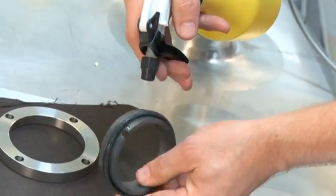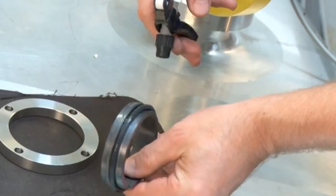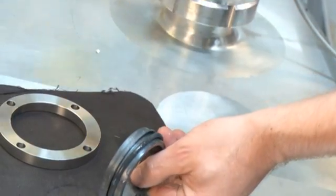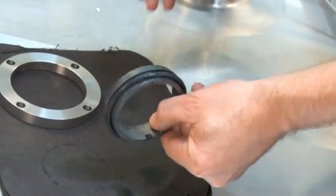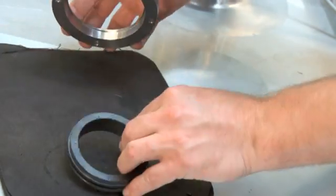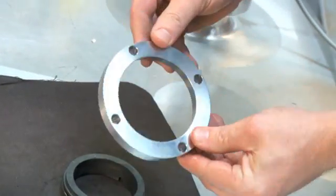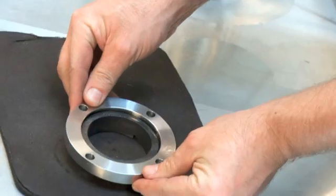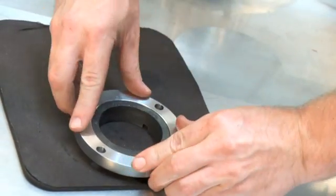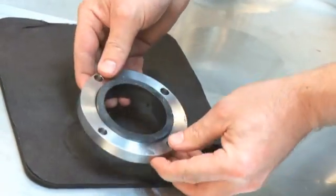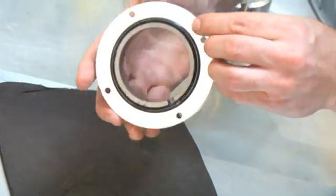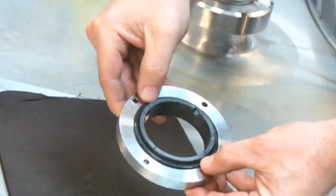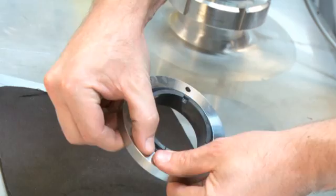Lubricate it with water to make it slide easily into place. Mount the stationary part of the seal and O-ring in the retainer ring. Make sure that the O-ring is properly positioned.